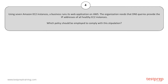Question number four: Using seven Amazon EC2 instances, a business runs its web application on AWS. The organization needs DNS queries to provide the IP addresses of all healthy EC2 instances. Which routing policy should be employed to comply with this stipulation?